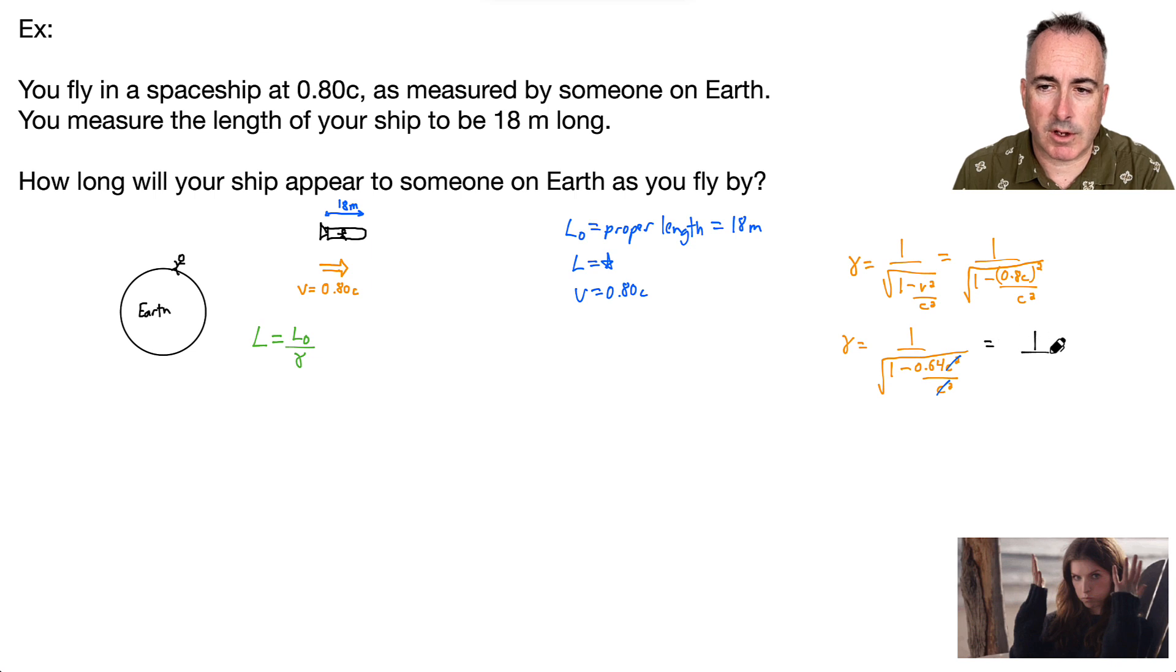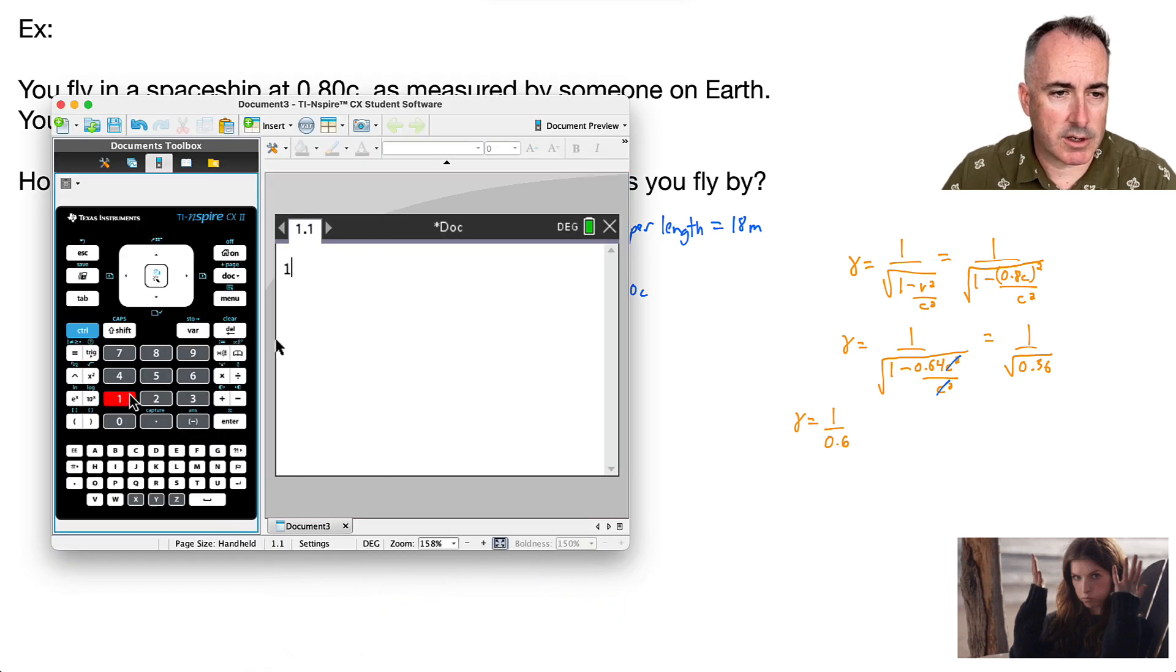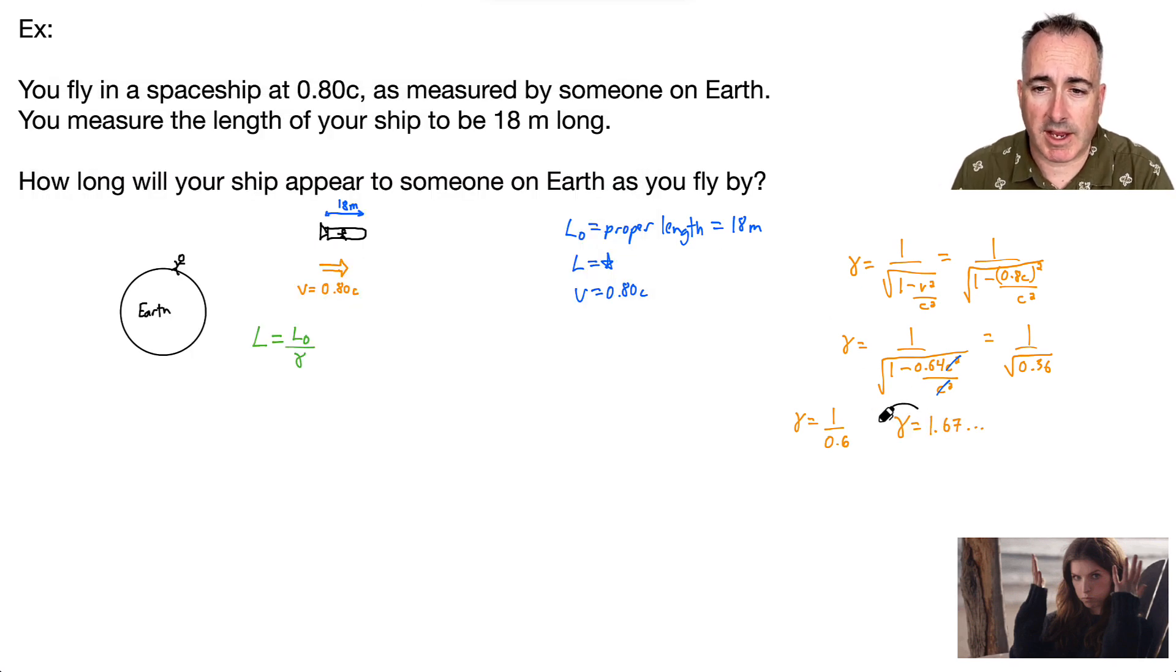What's 1 minus 0.64? That's 1 over 0.36, square root. Square root of 0.36 is 0.6. So gamma equals 1 over 0.6. That gets my gamma value of 1.67. So I have my gamma now, which is really good, because now I can calculate L.